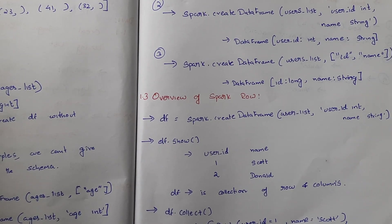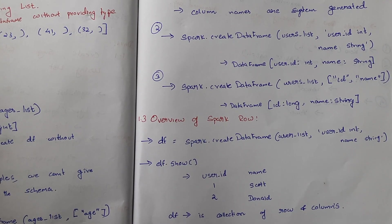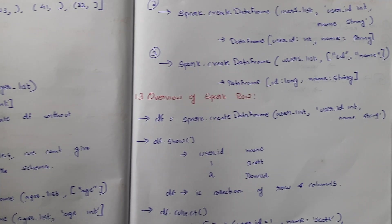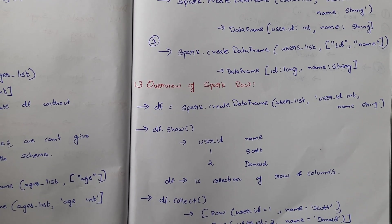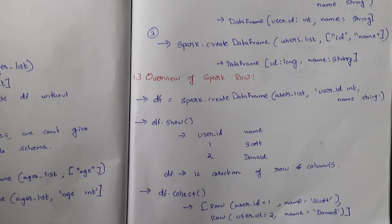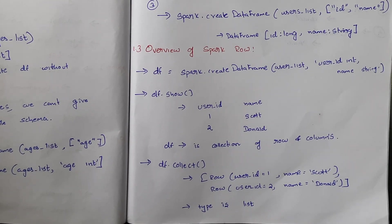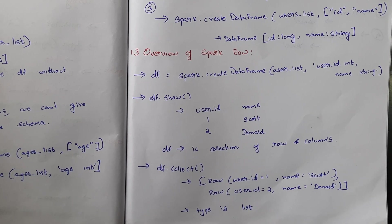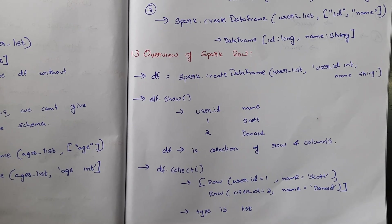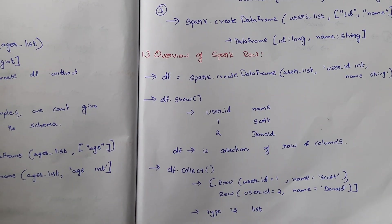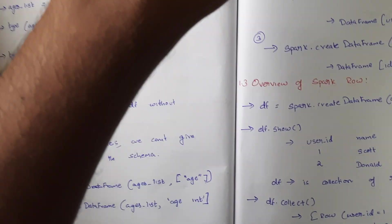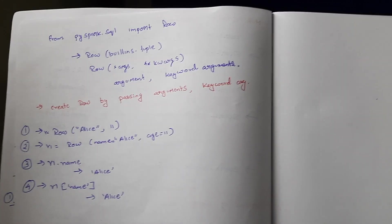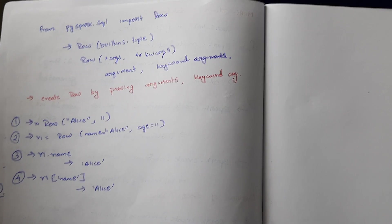So what is a Row in Spark? If we create a DataFrame df = spark.createDataFrame(users_list, schema='user_id integer, name string') and call df.show(), it prints a table with columns user_id and name. A DataFrame is a collection of rows and columns. If we call df.collect(), we get a list of Row objects like Row(user_id=1, name='Scott') and Row(user_id=2, name='Donald'). The type returned is list.